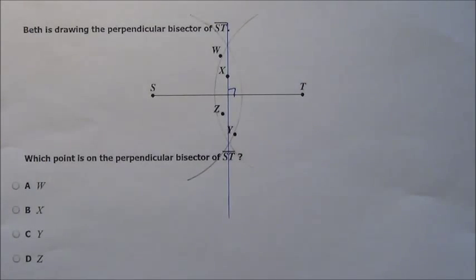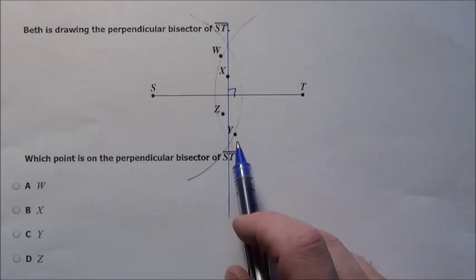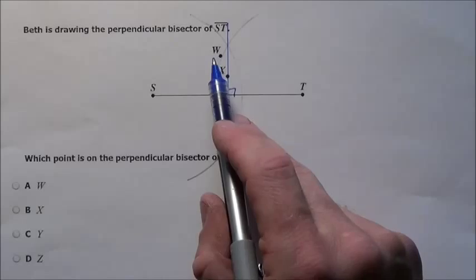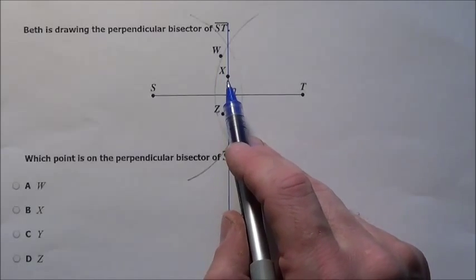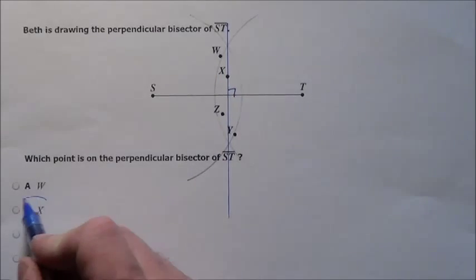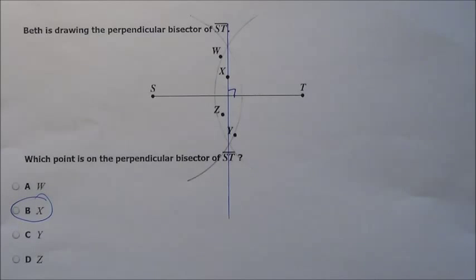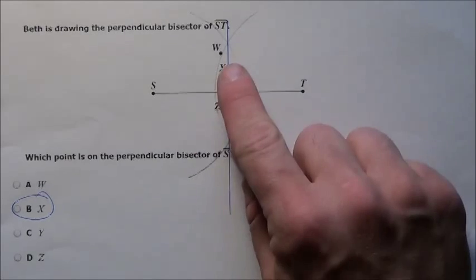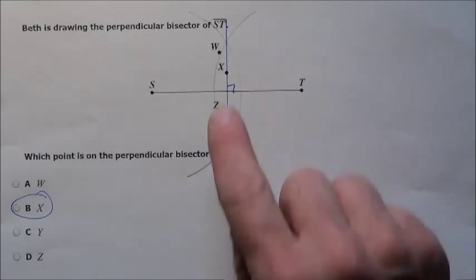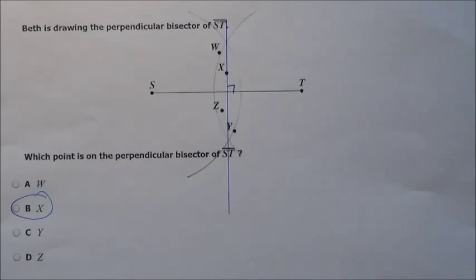Which one of those points does it go right through? It comes close to Y, comes close to Z, comes close to W — boom! Right through Mr. X it goes. So X is going to be our answer here. Which point is on the perpendicular bisector of line segment ST? That's Mr. X. Answer B for problem number two.